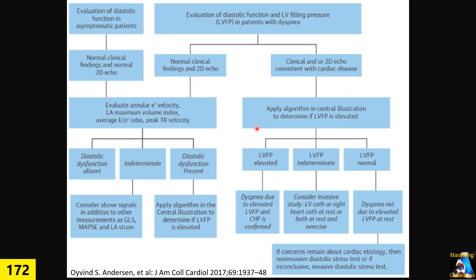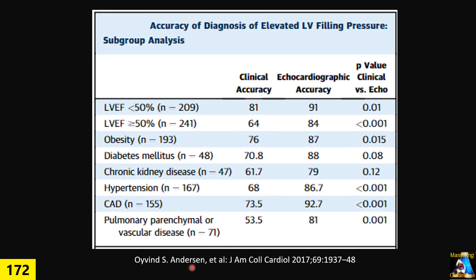For grading diastolic dysfunction, this is a more accurate approach for what we do in each situation. In one study by Dr. Ovind and colleagues involving over 450 patients, they showed that the guideline accuracy varies in different situations. For patients with low ejection fraction, the accuracy is 91%, but in patients with normal or preserved ejection fraction — HFpEF — the accuracy drops to 84%.